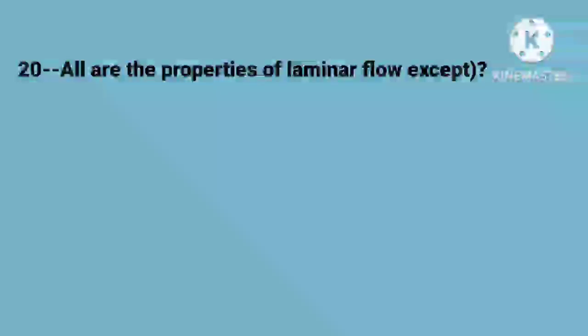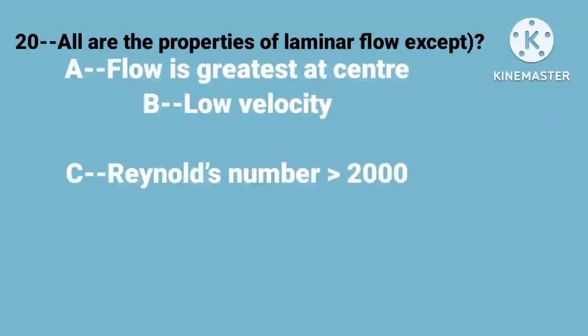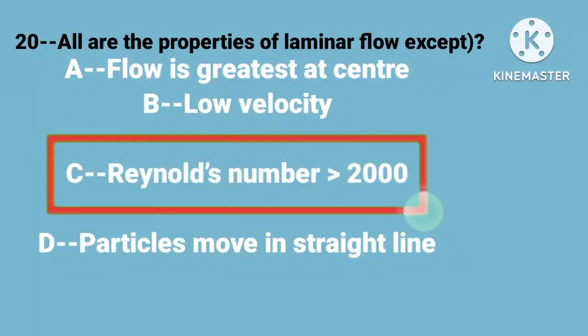Question number 20. All are the properties of laminar flow except. Correct answer is option C, Reynolds number more than 2000.